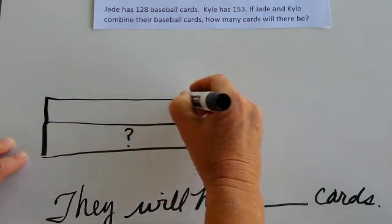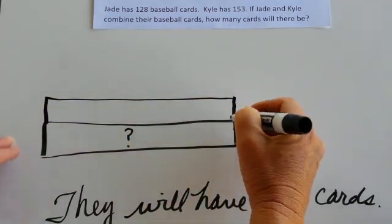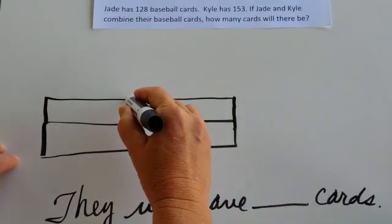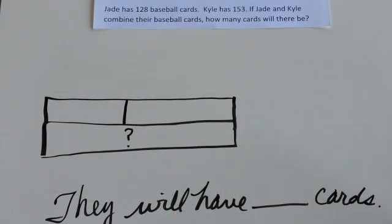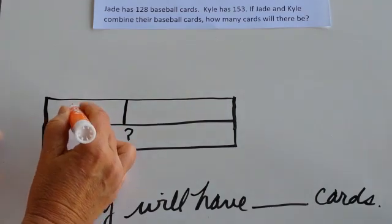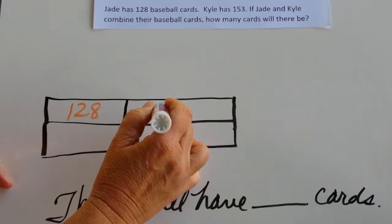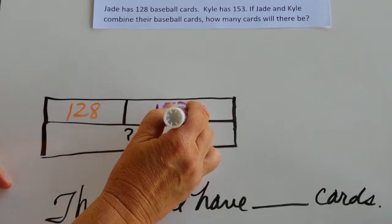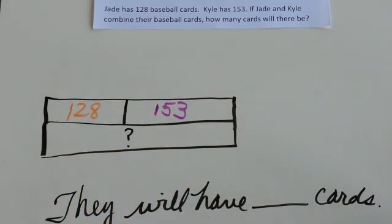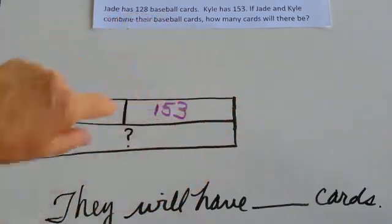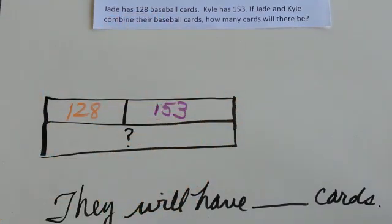The next unit bar that we draw is going to be the same exact size, because we're talking about the same unit, but we're going to divide it into chunks this time. We're going to organize our information. We know that Jade has some cards and we know that Kyle has some cards. As we look at Jade and Kyle's cards in this chunk and this chunk together, they will equal the whole unit.